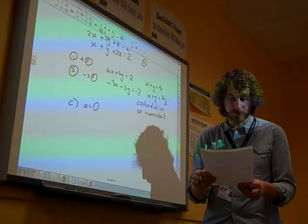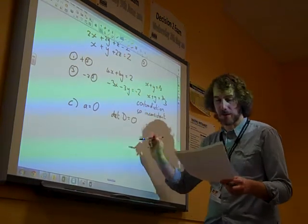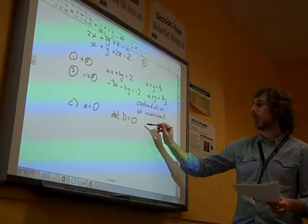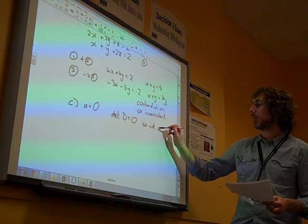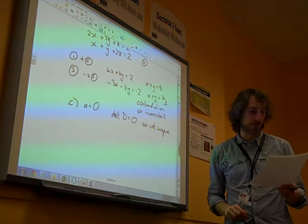This gives us the equations. If this gives us the determinant of being 0, there we go, let's get that bit sorted out. So not unique. There we go, make sure we get that mark for showing that bit.